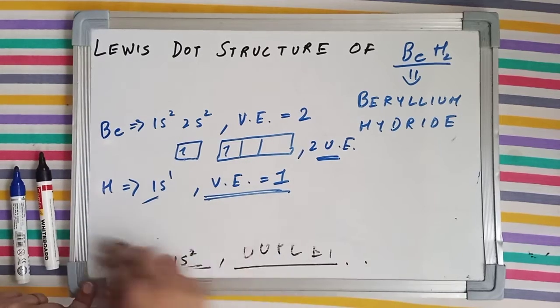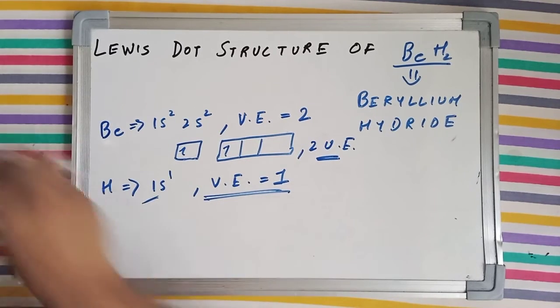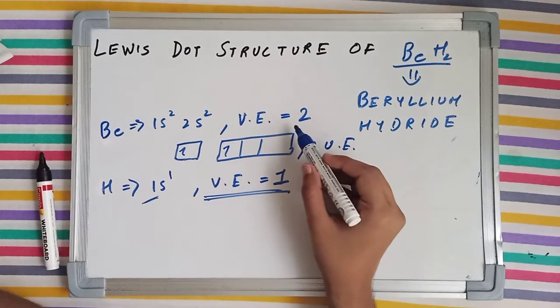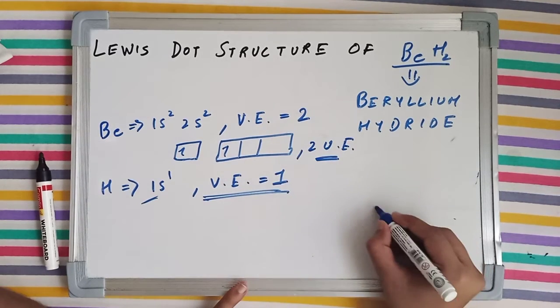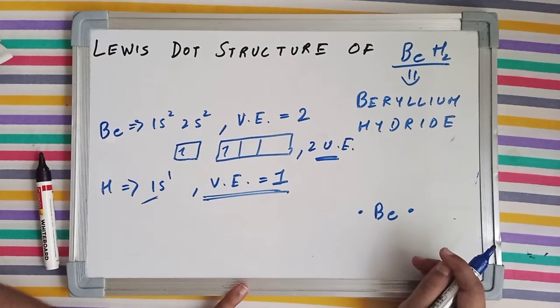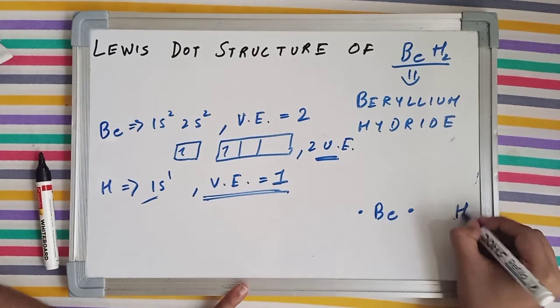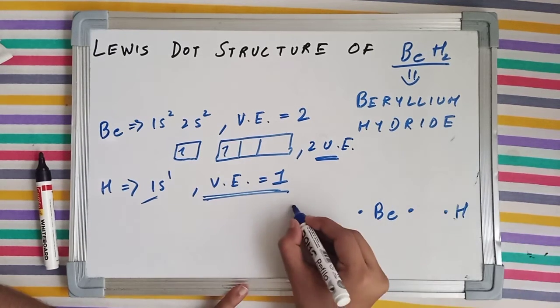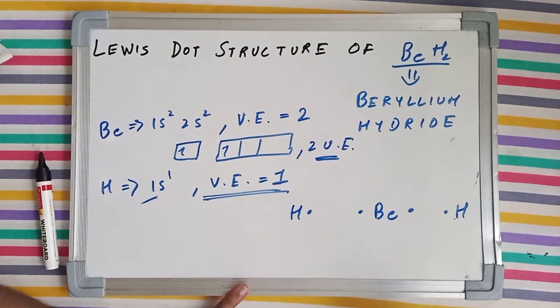Now, let's dive into the structural part. Beryllium has two valence electrons. One on the right side and one on the left. And hydrogen having just a single valence electron, also one on the right and one on the left.